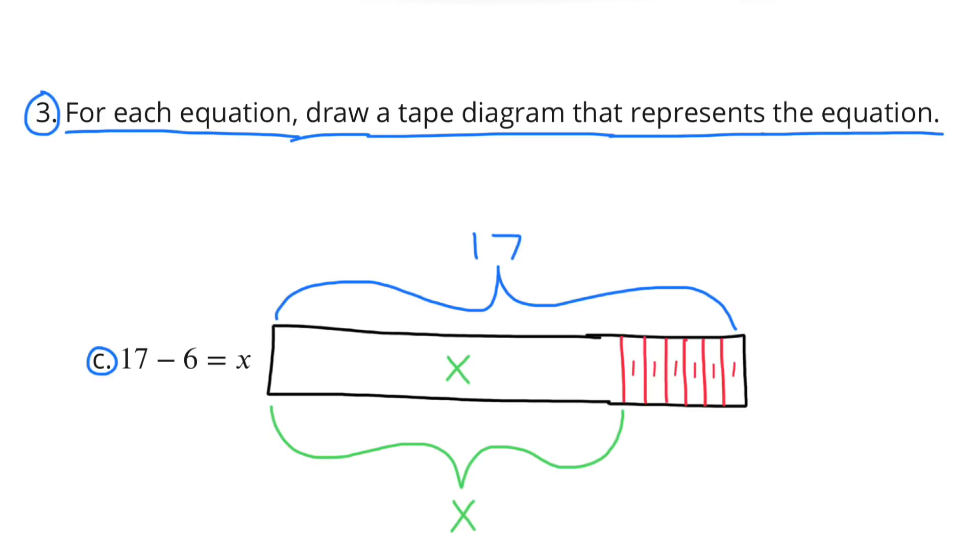Problem C: 17 minus 6 equals x. So I have a large value for x, and then I have 6 pieces on the end. All of them combined total 17. But if you take away the 6 pieces on the right, then it equals x. So 17 minus 6 equals x.